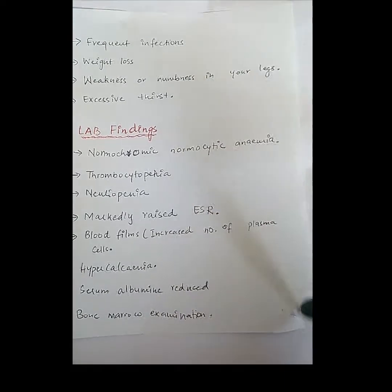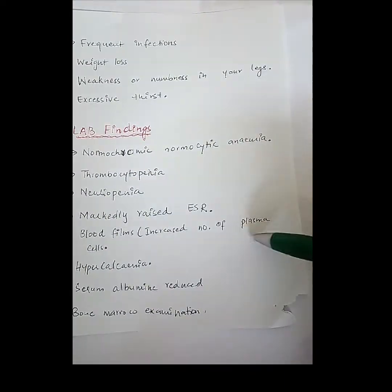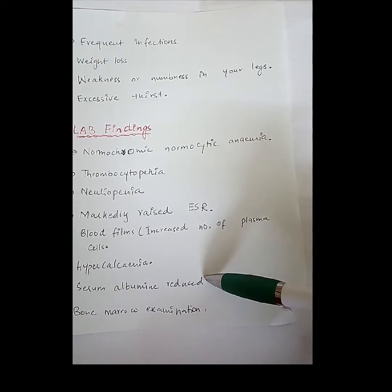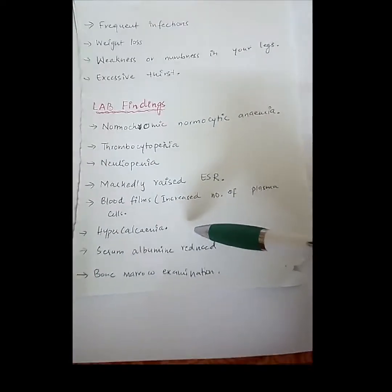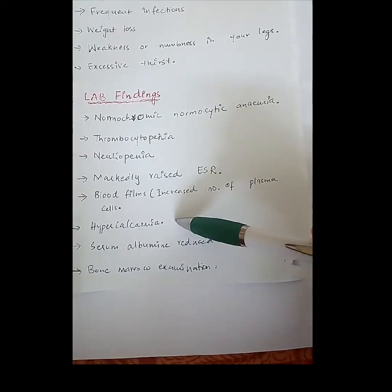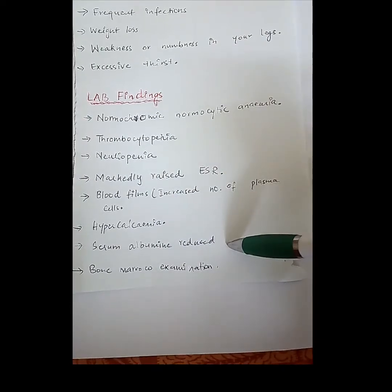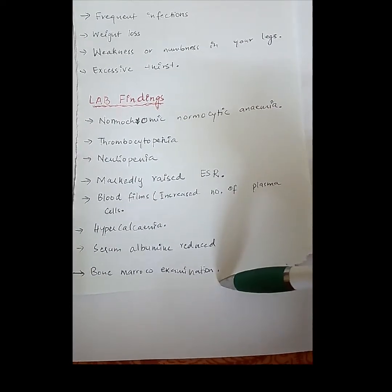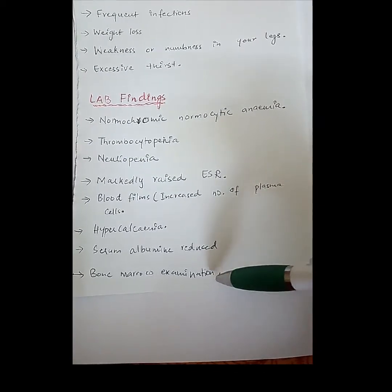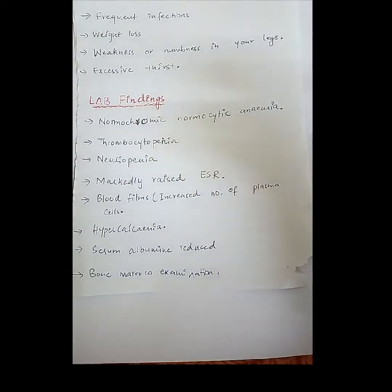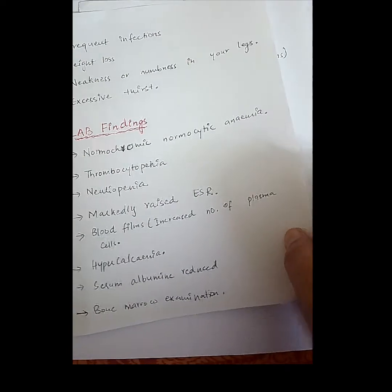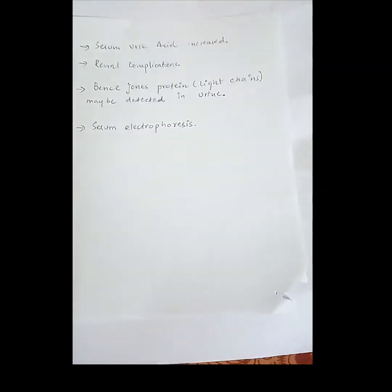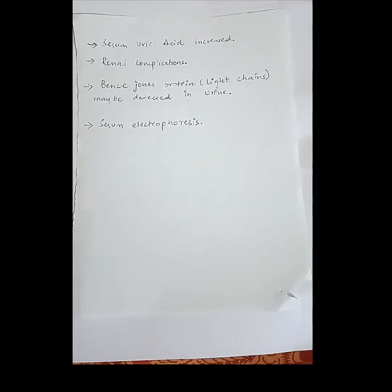In blood films, increased numbers of plasma cells are seen. Biochemistry tests show elevated calcium levels and reduced albumin levels. Bone marrow examination is helpful to assess plasma cell multiplication according to the patient's condition and stage, and to determine the dividing rate of plasma cells.